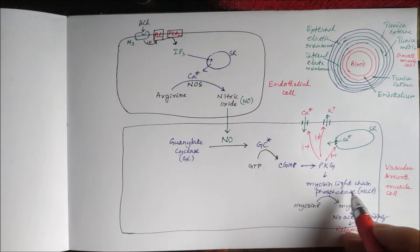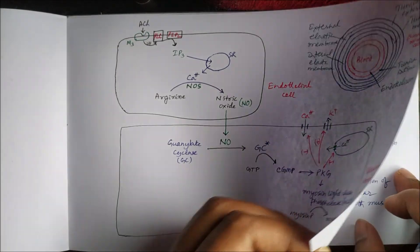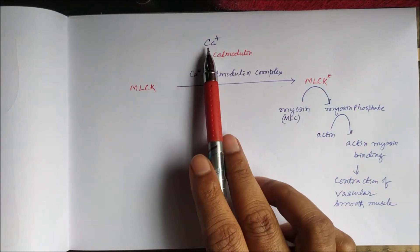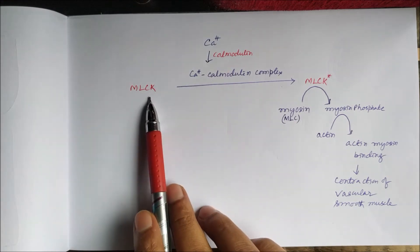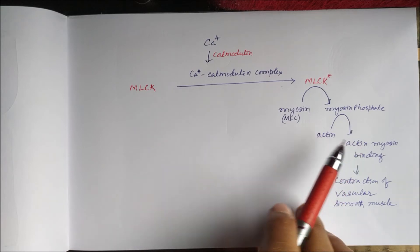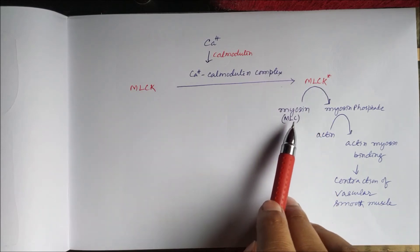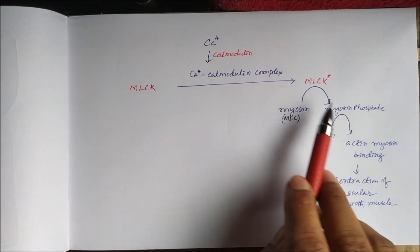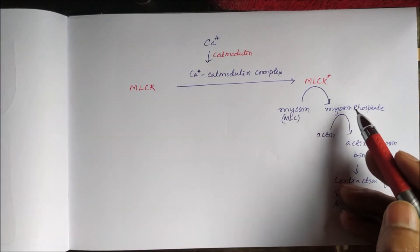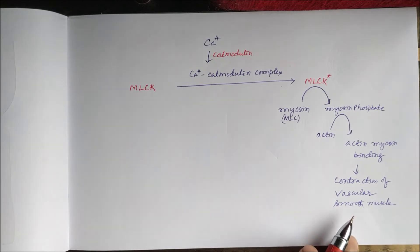Protein kinase G activates myosin light chain phosphatase. In smooth muscle, the mechanism of contraction is mediated by the calcium-calmodulin complex: calcium, in the presence of calmodulin, activates myosin light chain kinase. Actin and myosin are the two contractile proteins. When activated, myosin light chain kinase phosphorylates myosin to myosin-phosphate, which then binds with actin — and this actin-myosin binding results in contraction of the vascular smooth muscle.